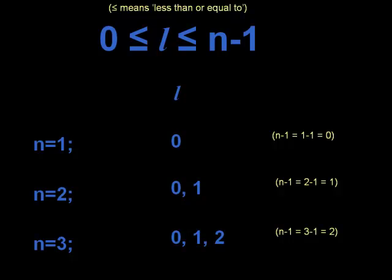In the previous lectures, we saw that the azimuthal quantum number L is dependent on the principal quantum number N, such that L can be a whole number ranging from 0 up to N-1.